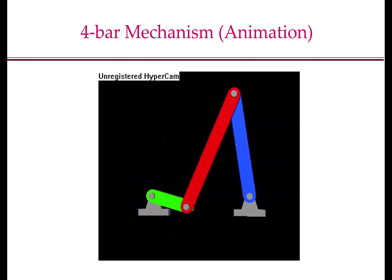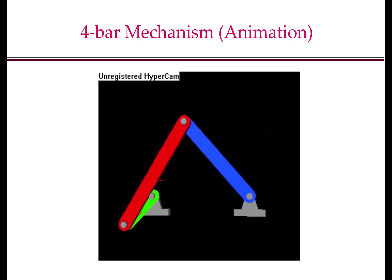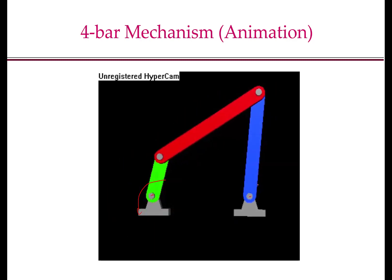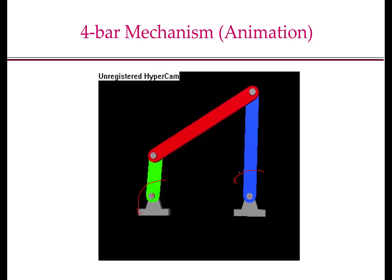Now let us look at the four-bar mechanism in motion. The green link is constrained by this joint here and undergoes a pure rotation — it is a one degree of freedom motion. The blue link also undergoes a one degree of freedom motion and it was also a pure rotation. So the joints are essentially constraining the motion of the green and blue links. Furthermore, the red link here actually undergoes a motion that is neither pure rotation nor pure translation — it is a complex motion, but constrained by the motion of the green and the blue link. The key point is that by putting in the pivots at particular places on the links, we are constraining the motion of the links.